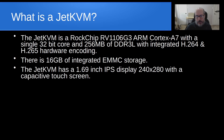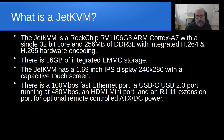The JetKVM also has a 1.69-inch IPS display with a resolution of 240 by 280 with a capacitive touch screen. There is a 100 megabit fast Ethernet port — and while that may sound limited, the only thing it has to do is display your screen, which is more than enough. It also has a USB-C port, which is USB 2.0 running at 480 megabits, but that only needs to support your keyboard and mouse.